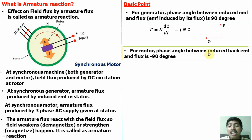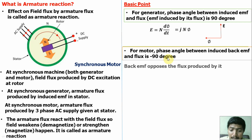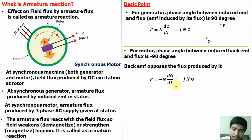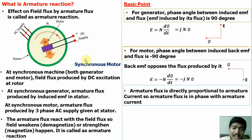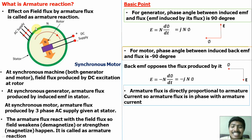For a motor, the phase angle between the induced back-EMF and flux is minus 90 degrees, because the back-EMF opposes the flux: E = −N · dΦ/dt = −jNΦ, and minus j means minus 90 degrees. So the phase angle between the induced back-EMF and flux is −90 degrees for a motor. Also, armature flux is directly proportional to armature current, so armature flux and armature current are in phase with each other.